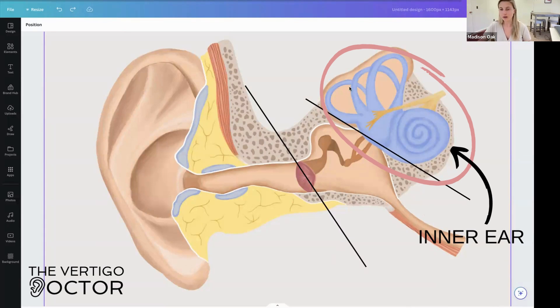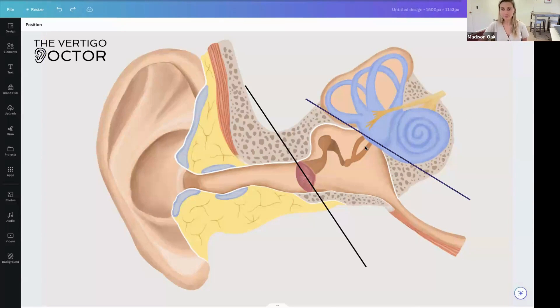Now the inner ear, and we're going to get another picture of this in one second, but I want to orient you first, is comprised of two things. First, you have your cochlea, which is right here. And then you have the vestibular system.